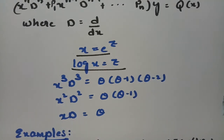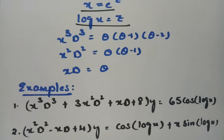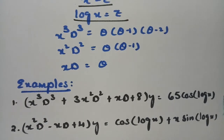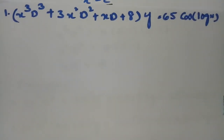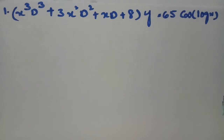This is how we convert into the linear equation with constant coefficients and then solve. Here are the most important examples. The first example is: x³D³ + 3x²D² + xD + 8 of y = 65 cos(log x).